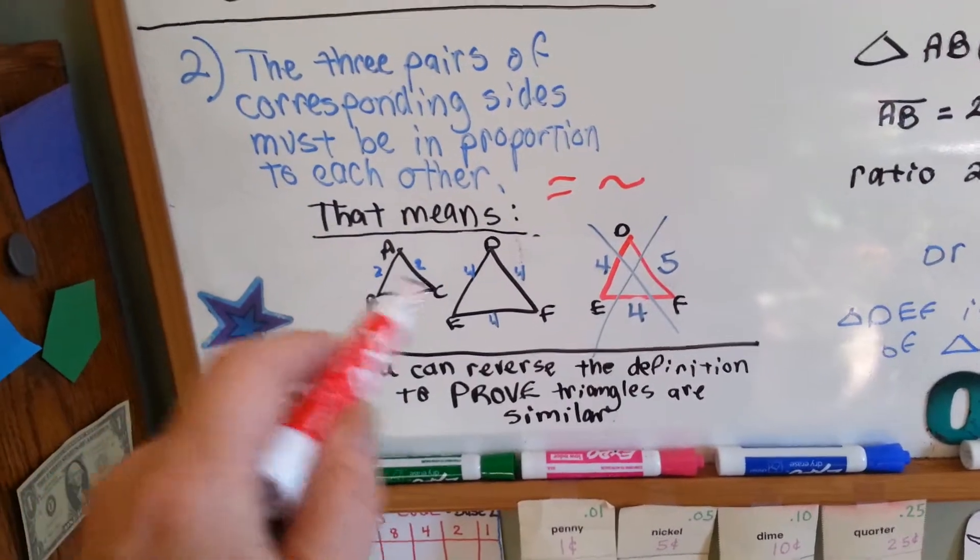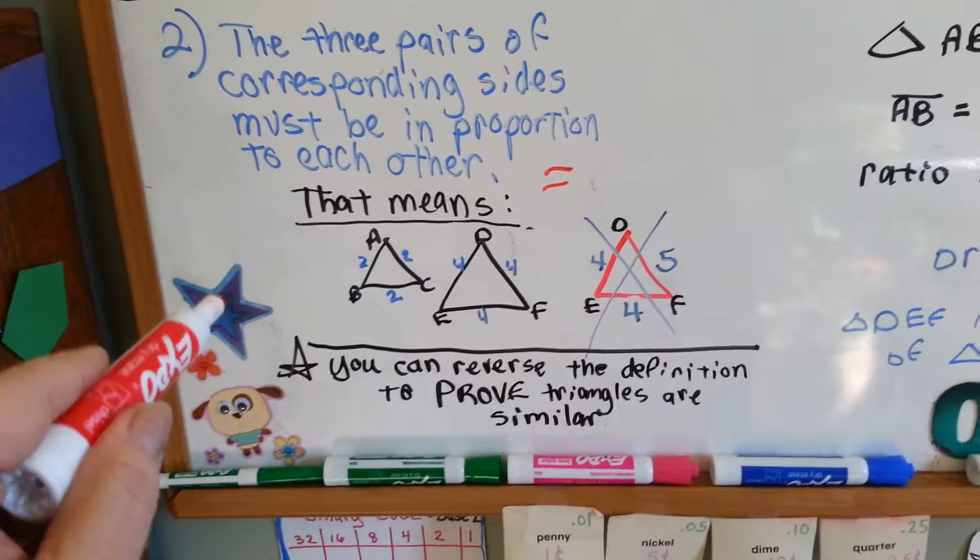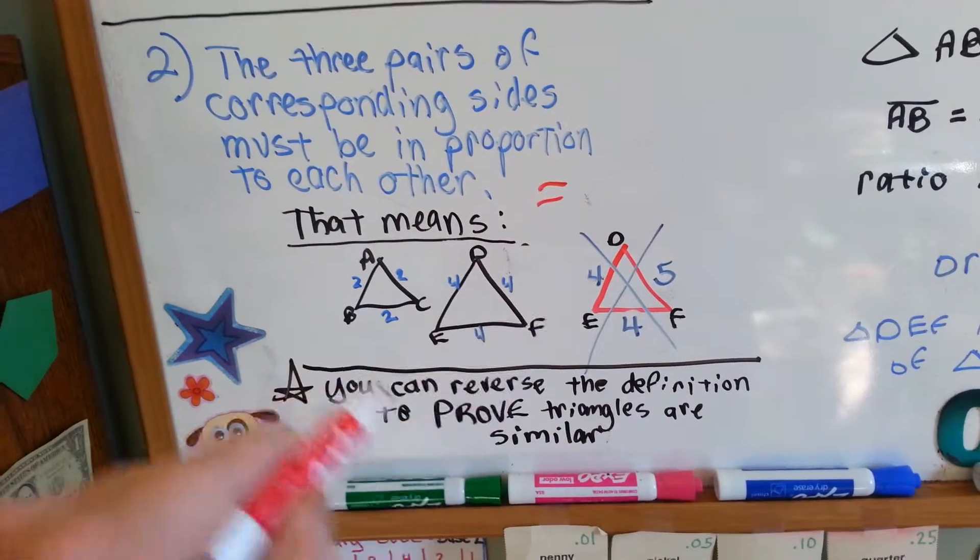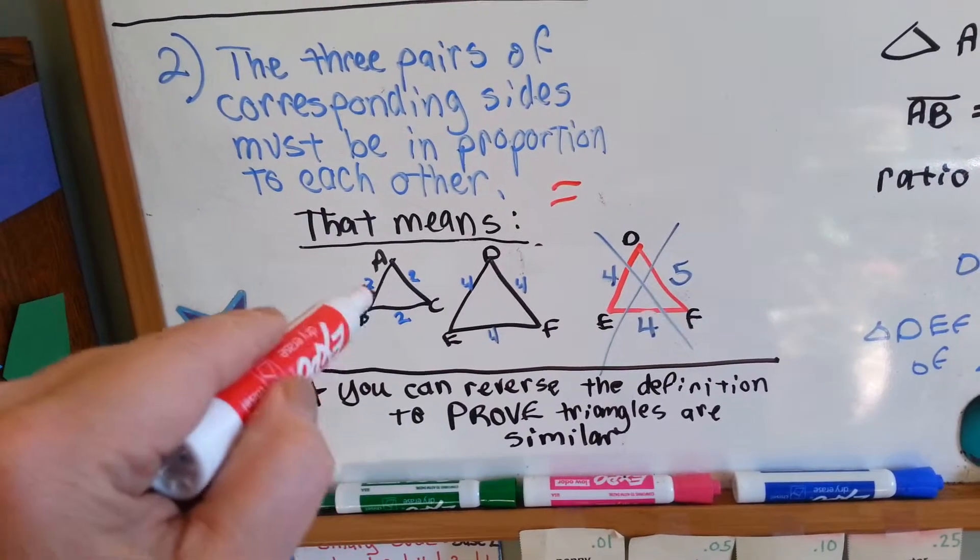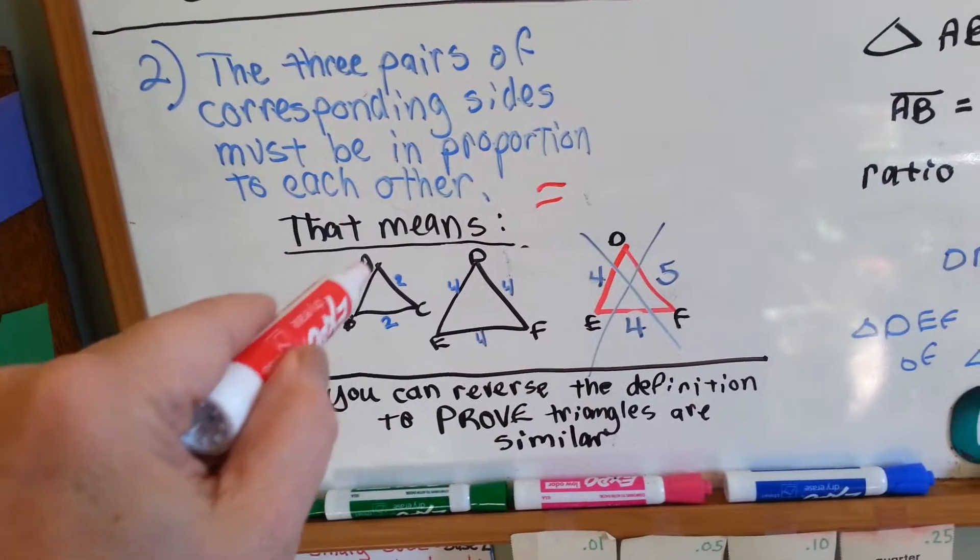Or in proportion to. So, here's what that means. Here you've got triangle ABC and triangle DEF. This one has sides that are all two. Let's say it's two inches or whatever.